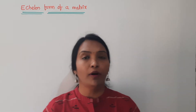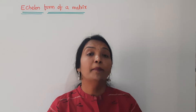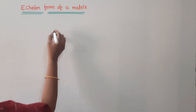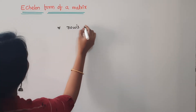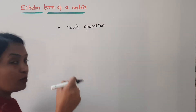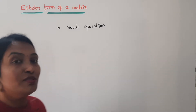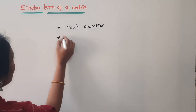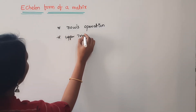Here is Echelon Form. Echelon Form is used to find the rank. In Echelon Form, we are using only row operations. The matrix will be converted to the upper triangular matrix.